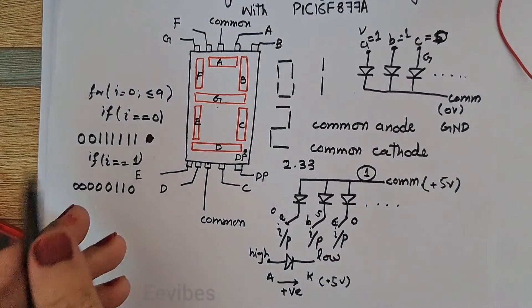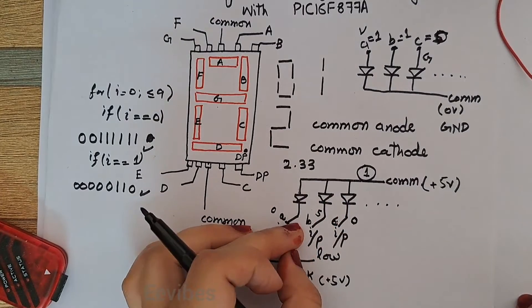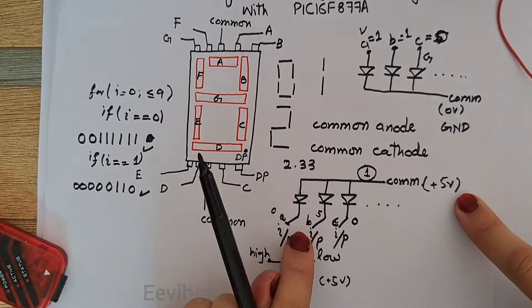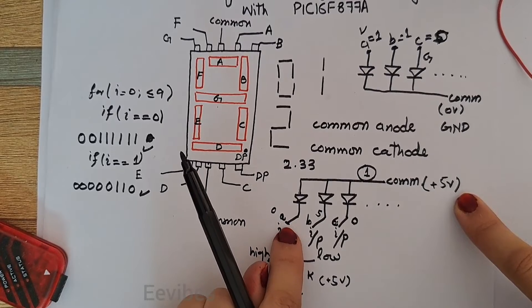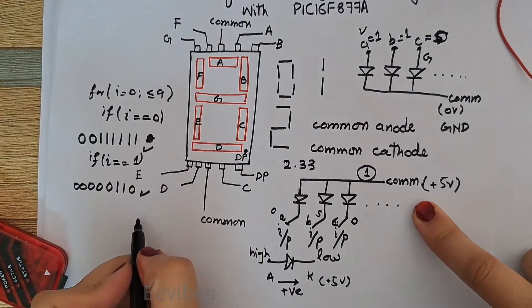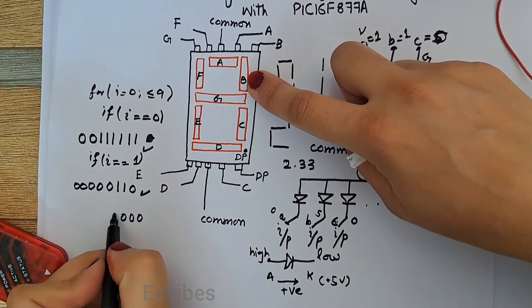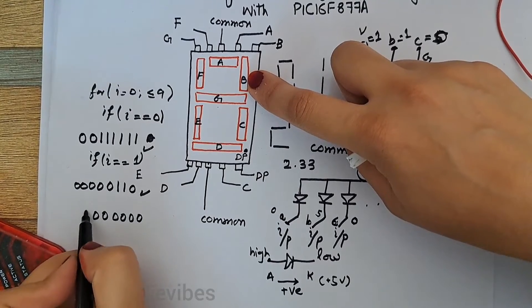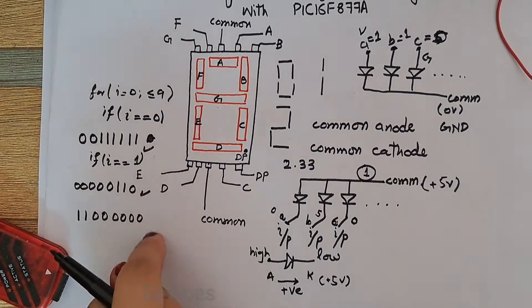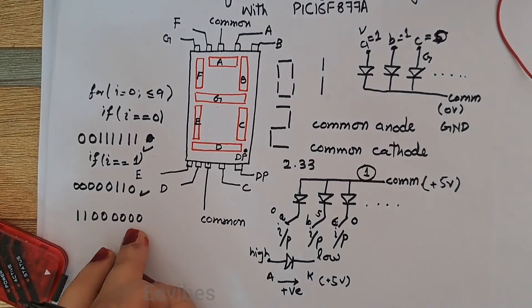For the common anode type, since the common point is at high voltage, you need to send logic zero to turn on any LED. To display zero in common anode mode, you send zero to A, B, C, D, E, and F, and one to G — these values are basically the complement of the common cathode values.